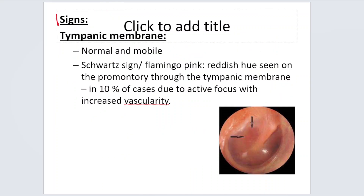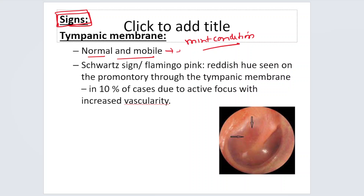Regarding signs, the tympanic membrane appears normal and mobile — described as being in mint condition. In 90% of cases, you will not get any clue to the diagnosis from looking at the tympanic membrane.